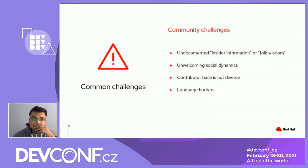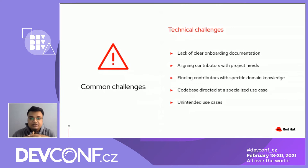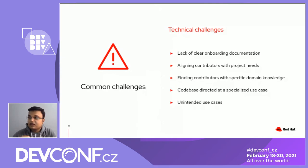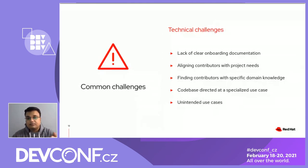Technical challenges include a lack of clear onboarding and getting-started documentation, and difficulty aligning contributors with different skills to the most appropriate domains inside the project. Finding additional contributors with specific domain knowledge of very specialized use cases might be really difficult. A project code base may be directed at specialized use cases — the project might be relatively niche — so locating additional contributors who share its typical use cases can be very challenging. There are also unintended use cases, where users might be applying a project's software to situations that the project's founders had never thought about, meaning the founders may themselves be limiting their outreach.